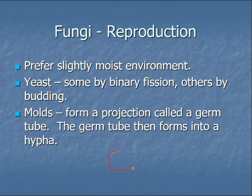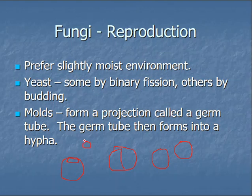Dimorphic fungi prefer a slightly moist environment. Yeast reproduce by binary fission and budding — they can do either one. Binary fission is where one cell divides in half creating two individual cells. Budding is where the cell buds off a small part that then separates and grows into a bigger cell. Molds use hyphae that form a germ tube, allowing for germination and reproduction.